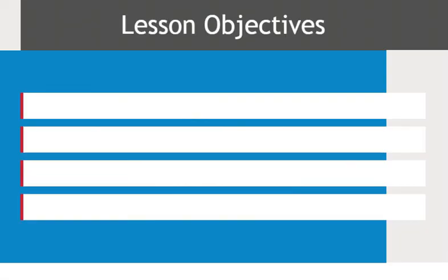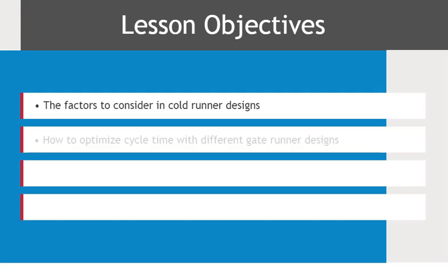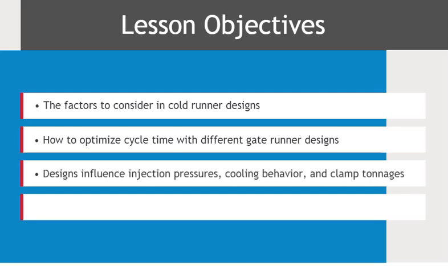In this lesson, you will learn the factors to consider in cold runner designs, how to adjust cycle time with different gate runner designs, how different runner designs influence required injection pressures, cooling behavior, and clamp tonnages, and how reduction in runner volume can save money.